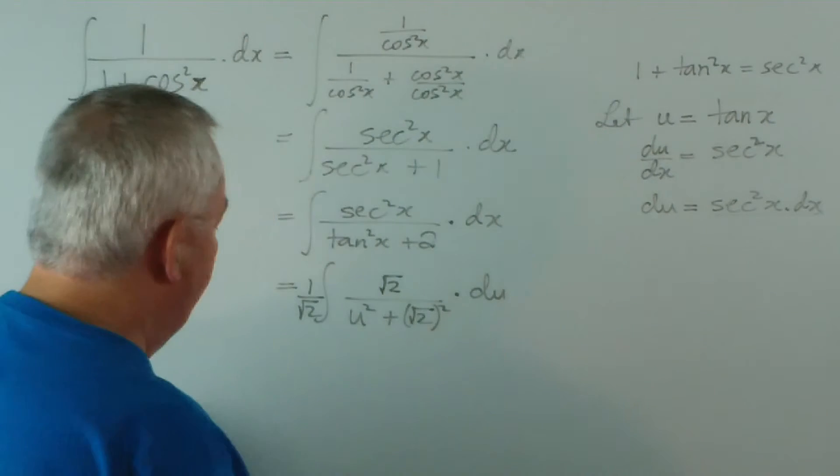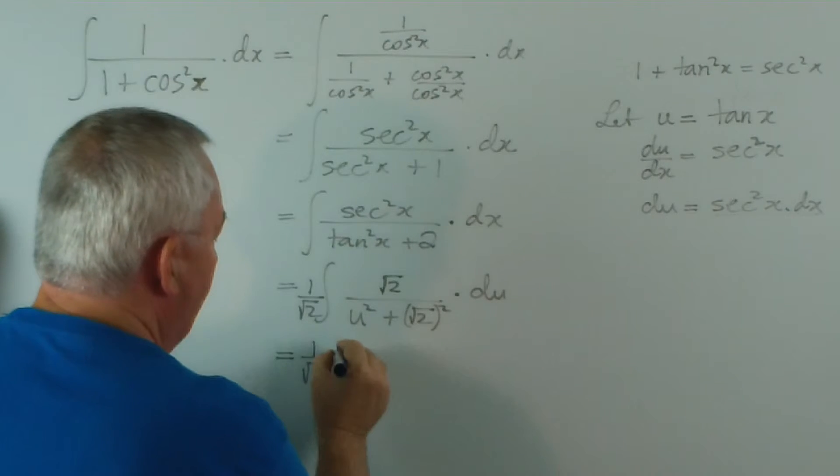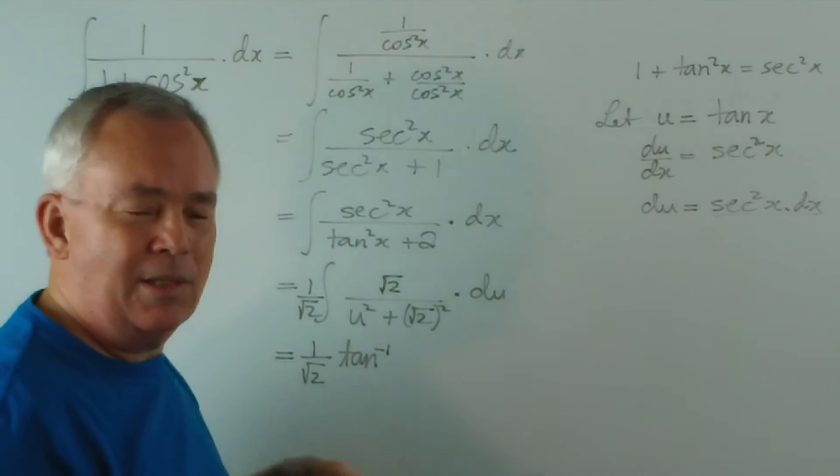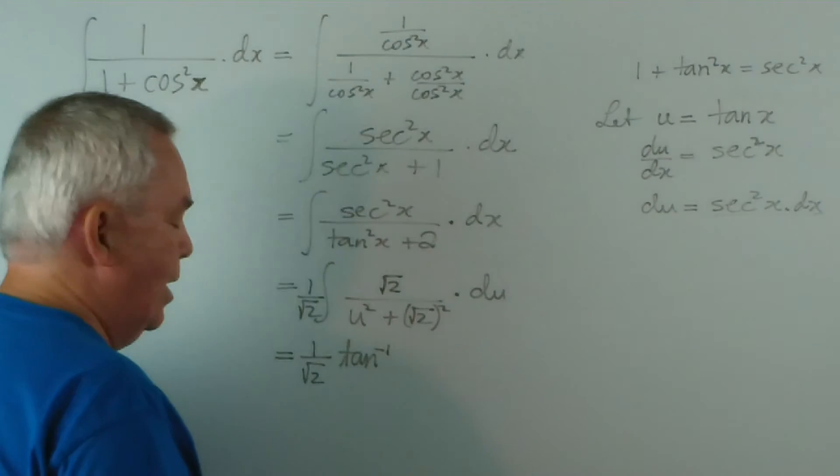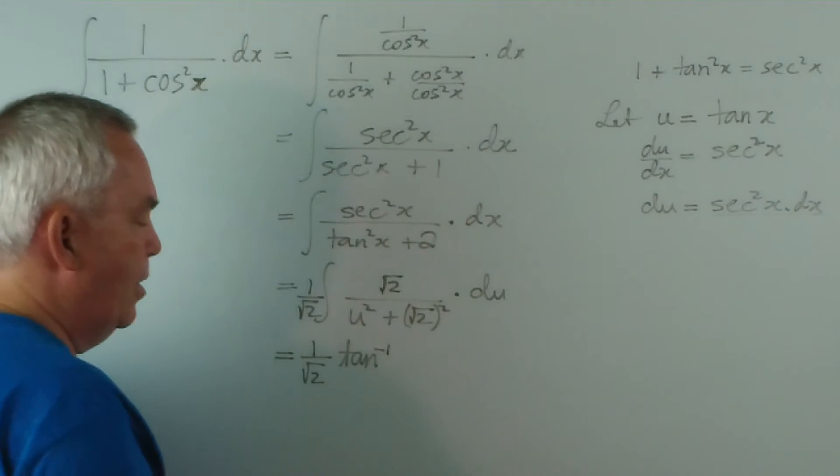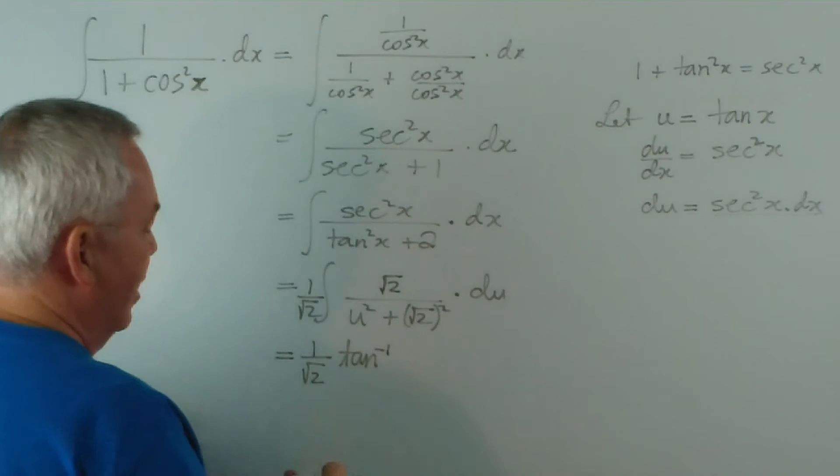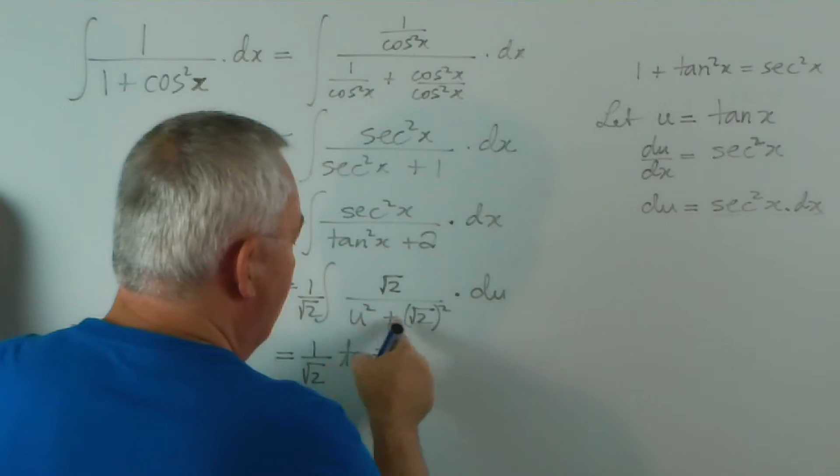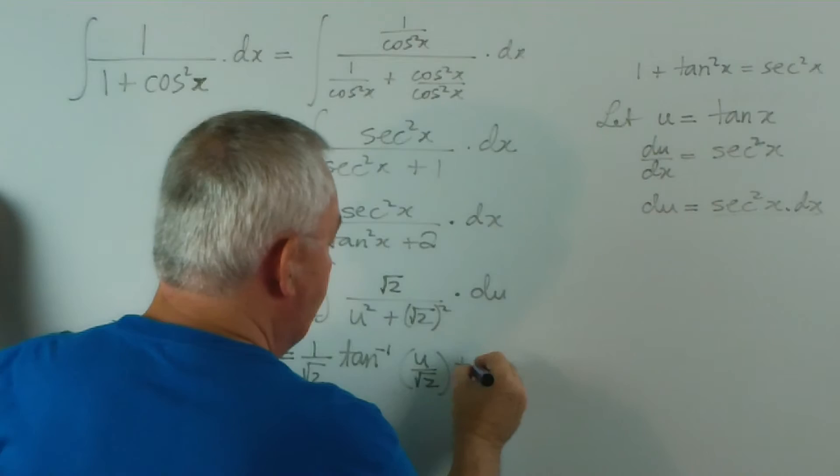And that is very definitely our inverse tan function. So we have 1 on root 2, inverse tan. By the way, in the United States, I know you use arctan. In some ways, it's very sensible. But in deference to my colleagues and students in Australia, I'm going to use the notation we use here. So please forgive me for that. Just understand that this is the same as your arctan. So it's the inverse tan of u on root 2 plus c.